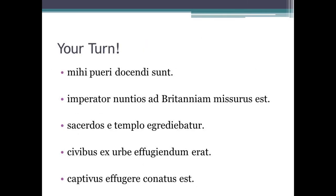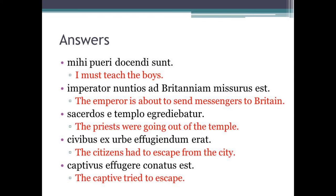I'd now like you to have a go at the following sentences — give it your best shot, I know they're tricky, so pause the video and have a go. Now let's go through the answers. 'Mihi pueri docendi sunt' — I must teach the boys. 'Imperator nuntios ad Britanniam missurus est' — the emperor is about to send messengers to Britain. 'Sacerdos e templo egrediebantur' — the priests were going out of the temple. 'Civibus ex urbe effugiendum erat' — the citizens had to escape from the city. 'Captivus effugere conatus est' — the captive tried to escape.